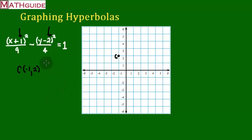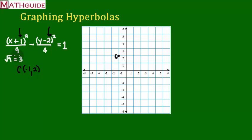Next on our list, we're going to use the bottom numbers. This bottom number says we're going to take the square root of it. So we take the 9 and take the square root, which gives us 3. I'm going to put the square root of 9 here. Then I'm going to do the same thing with the 4 — take the square root of 4. We did this with the ellipse too; you just take the square root of the bottom numbers.